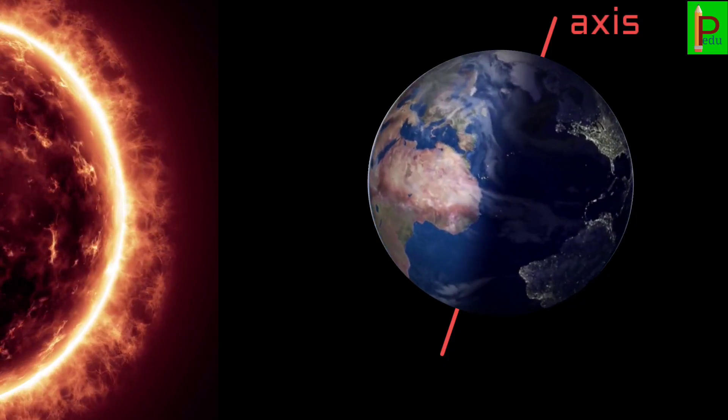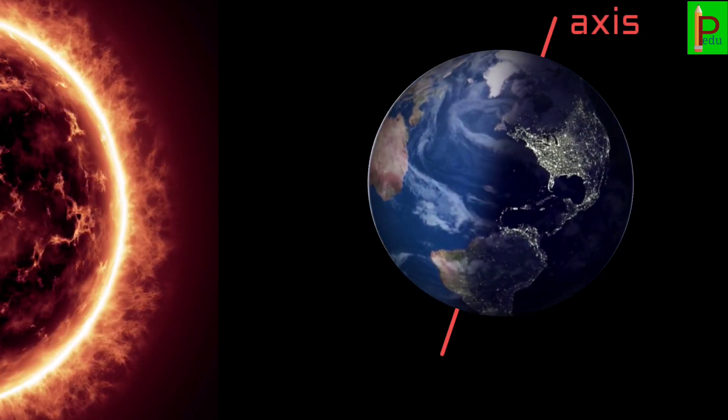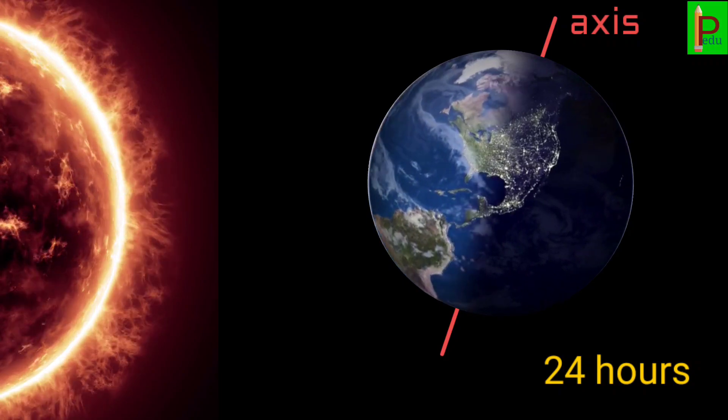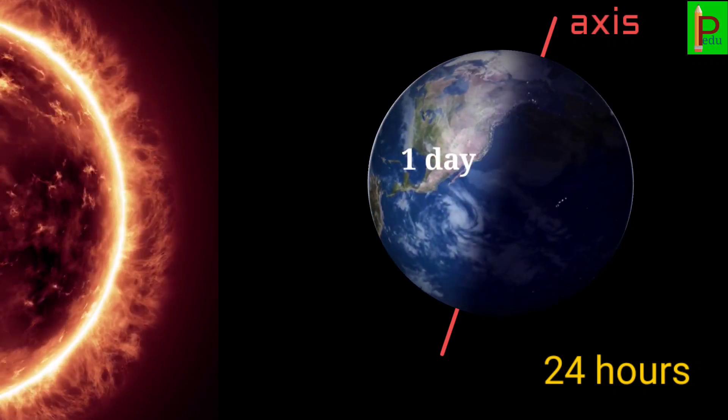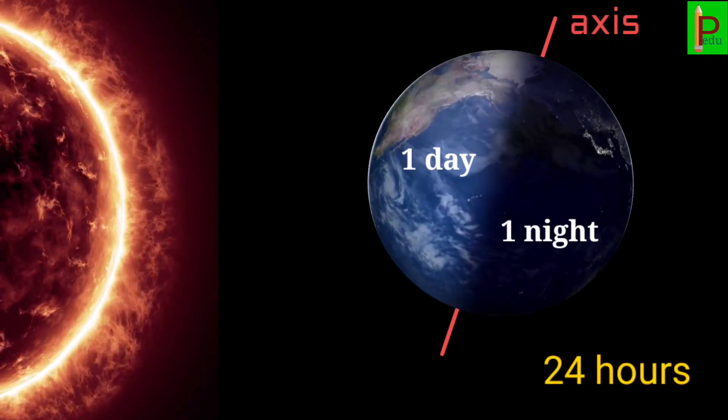The earth completes one spin around its axis in 24 hours. This is why one day and one night are of 24 hours.